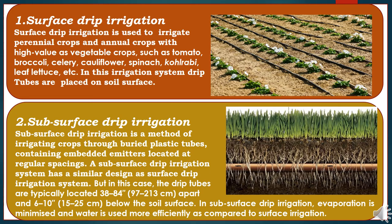The second drip irrigation method is subsurface drip irrigation — a method of irrigating crops through buried plastic tubes containing embedded emitters located at regular spacings. A subsurface drip irrigation system has a similar design as a surface drip irrigation system, but in this case the drip tubes are typically placed below the soil surface. In subsurface drip irrigation, evaporation is minimized and water is used more efficiently compared to surface irrigation. The key difference is that in subsurface drip irrigation the tubes are buried below the soil, while in surface drip irrigation the drip tubes are above the soil surface.